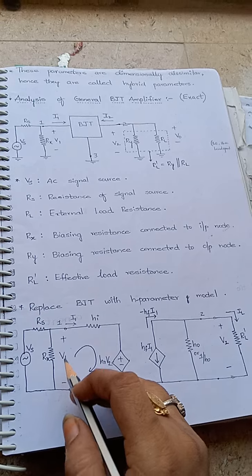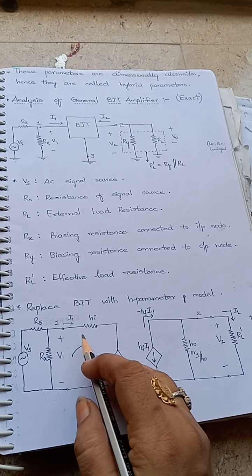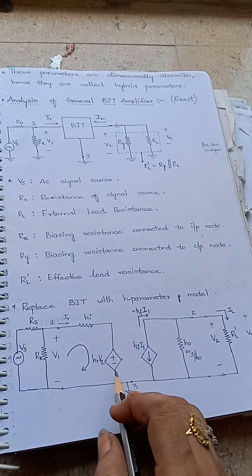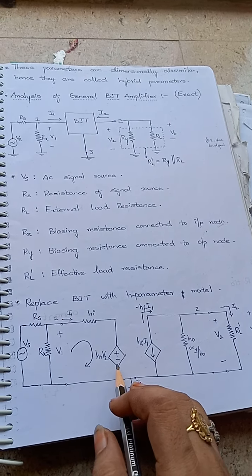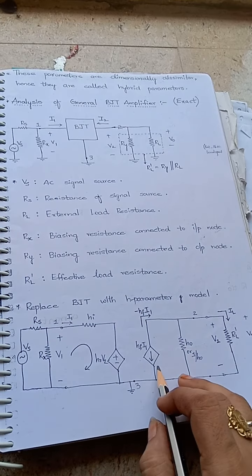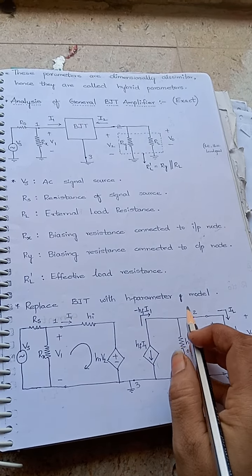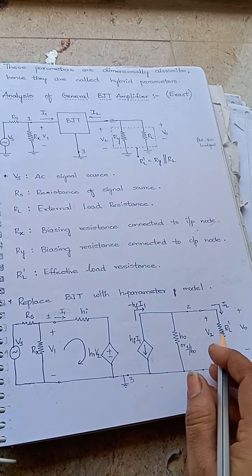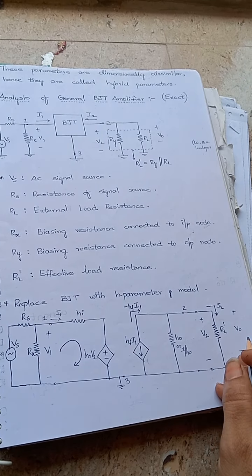We now remove Rx, then you have to represent hi and the voltage source hrv2, next hfi1. Here down, no upward, is minus h0, 1 by h0v2, RL', V0.